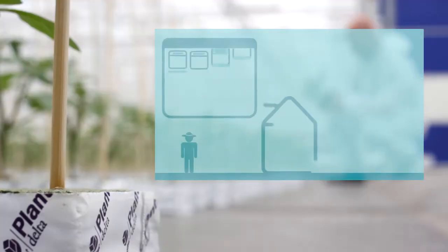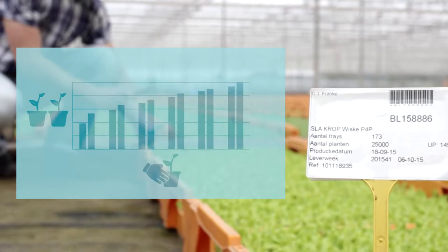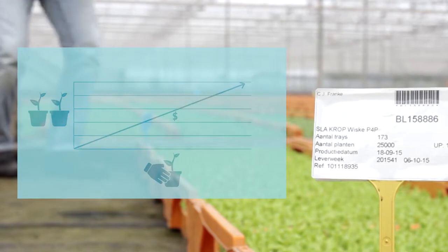AgriWare Business Essentials calculates exactly when which action is required and when the materials need to be available. Thanks to comprehensive statistics, the planning can be improved continually and the commercial yield can be increased.